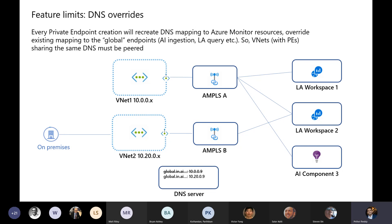Regarding DNS: when you create your private endpoint within your VNet, there is something called a private DNS zone. That private DNS zone is updated with the private endpoint IP. If you have two different VNets, there will be a separate DNS zone with another IP address. If you have overlapping address space — the same VNet space for VNet one and VNet two — you need to have a separate DNS zone for each of these VNets. Or you can peer them together, making sure there's no overlapping address space, but that's more work.